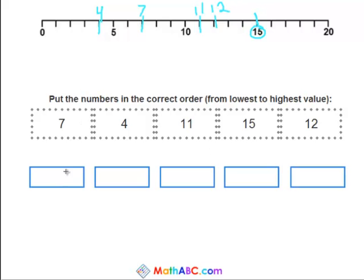So now they're all written out for us. So the first number, the smallest or the lowest number we have is 4, and then it's 7, and then 11, 12, and our last number, our highest number, is 15.